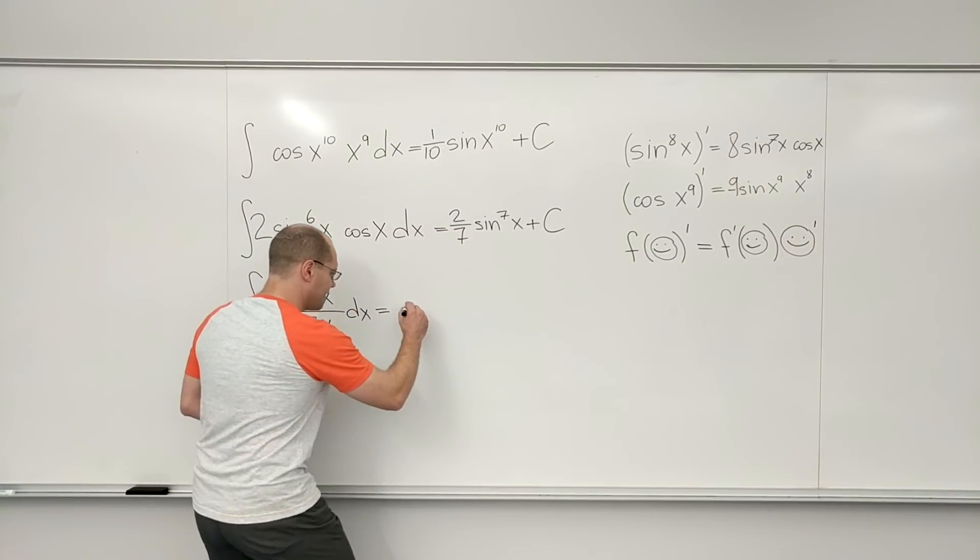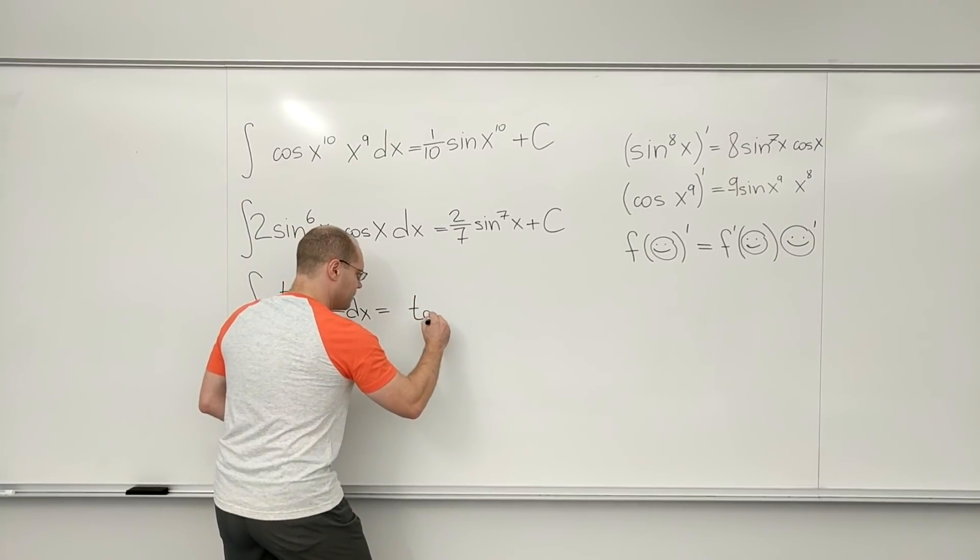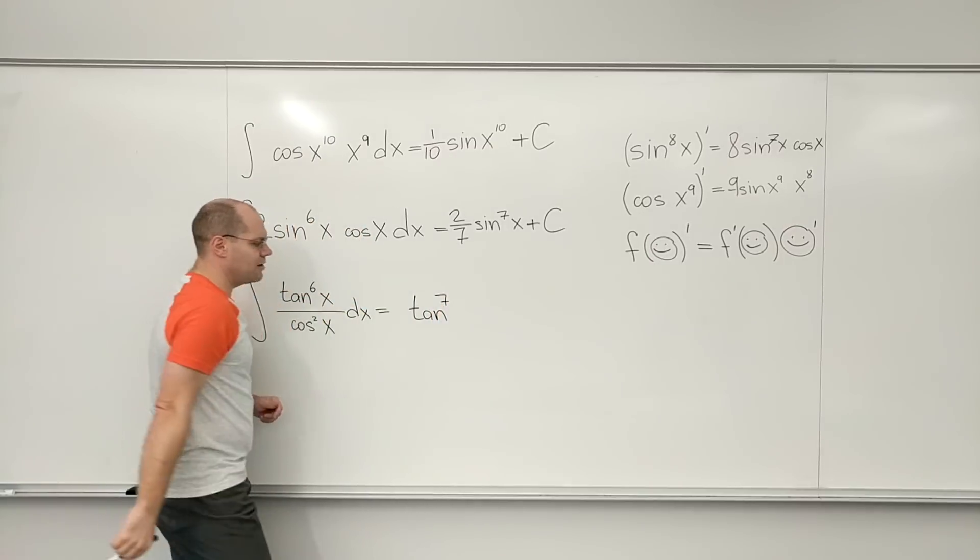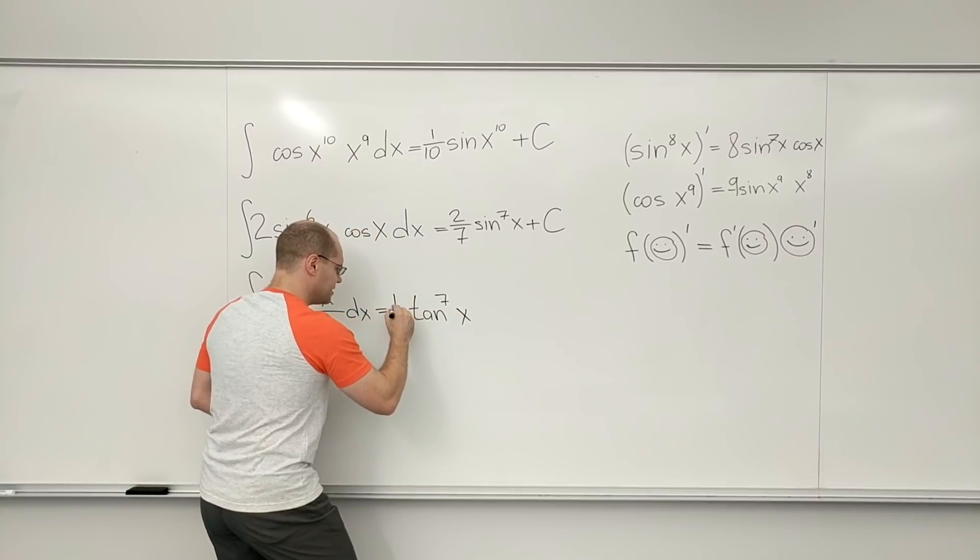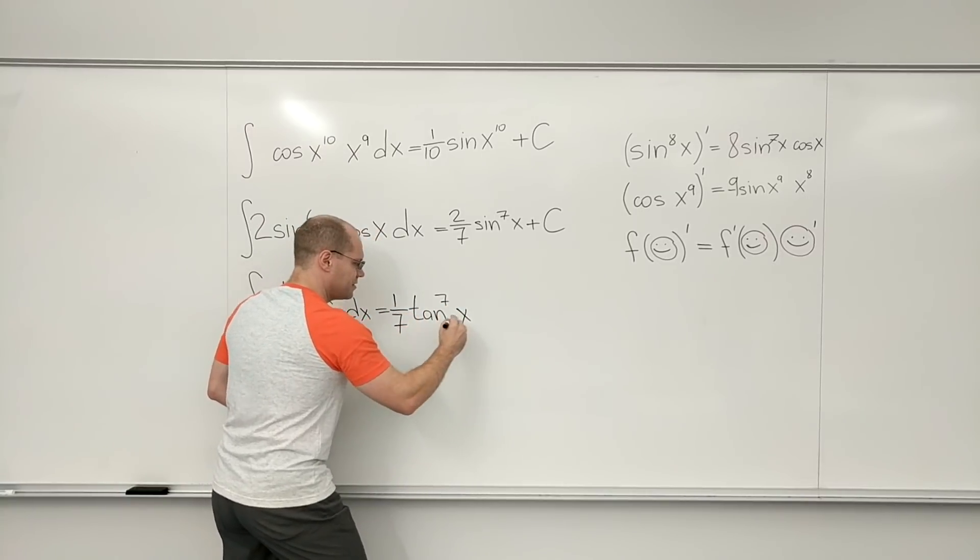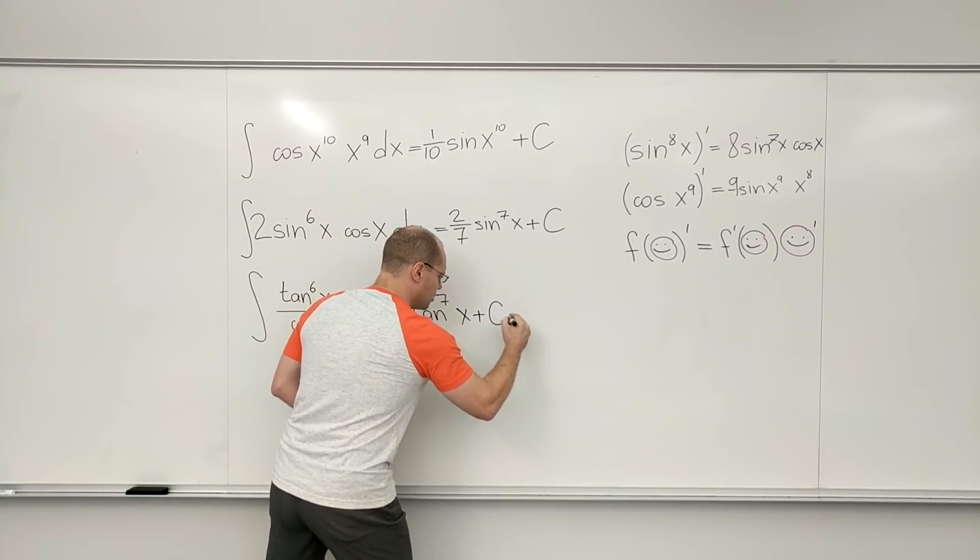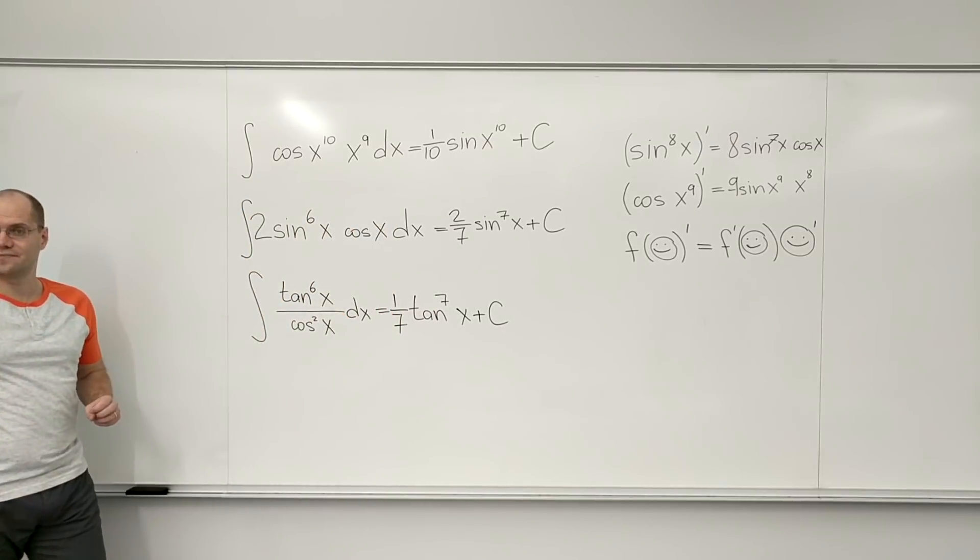So a lot of talking, but we basically figured out that this is tangent to the seventh power of x. And to make up for that seven, we need a one-seventh plus C. And it's very important that we did the rest in our heads.